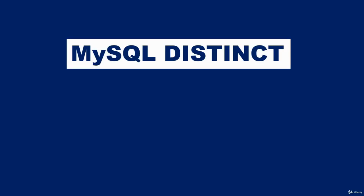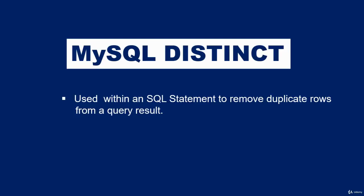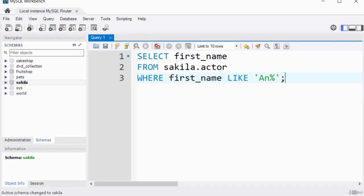Hello and welcome. The DISTINCT keyword is used within an SQL statement to remove duplicate rows from the result set of a query. When you execute some SQL statements, the result may contain duplicates. To remove them, include the DISTINCT keyword in your statement. Note that DISTINCT does not remove duplicates from the table itself — it only removes them from the result output of the query.